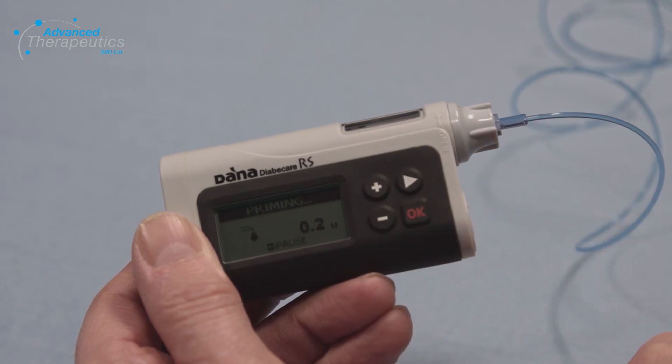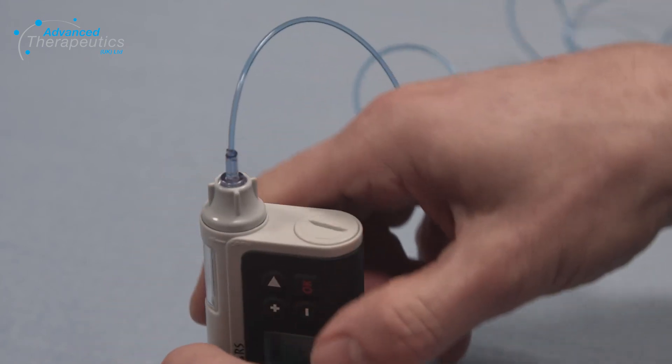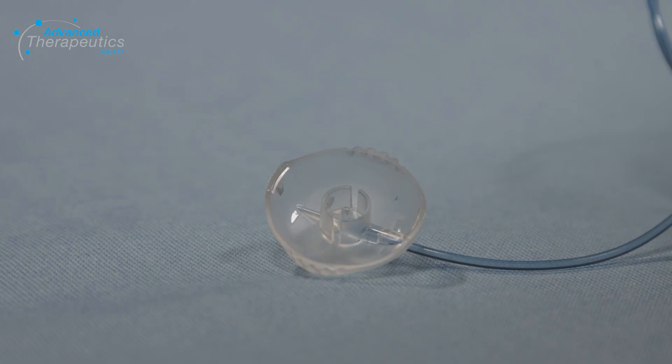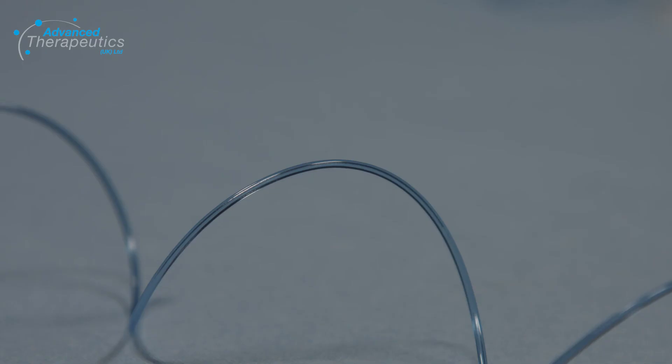You will see the prime start. Place the pump upright. Watch for the insulin passing along the tubing and ensure any bubbles are primed out. When 3-4 drops of insulin are seen at the end of the tubing, press the minus button to stop the priming and then press the minus button again to exit. A 60cm tubing will take around 14 units to prime.